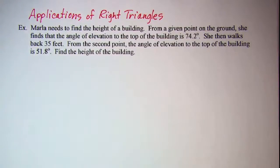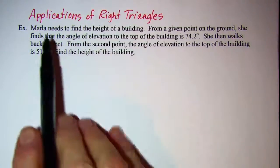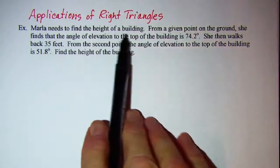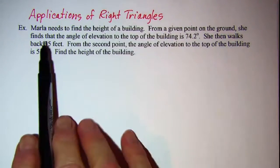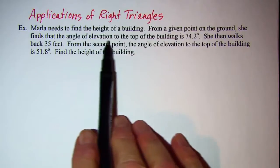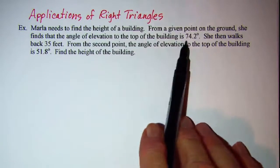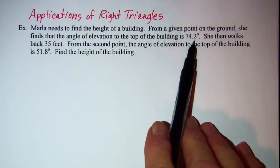In this video, we'll be looking at an application problem that involves right triangles. The problem we'll be doing: Marlin needs to find the height of a building. From a given point on the ground, she finds that the angle of elevation to the top of the building is 74.2 degrees.